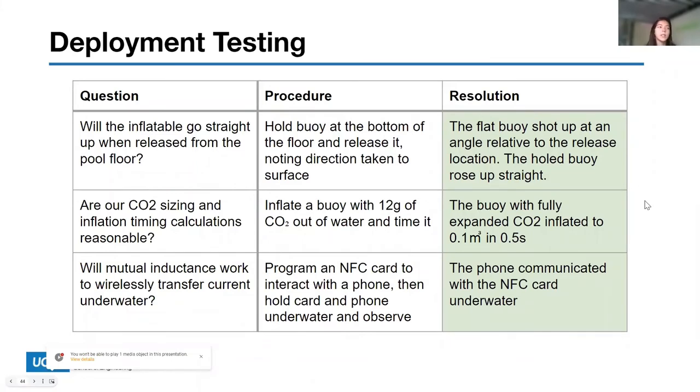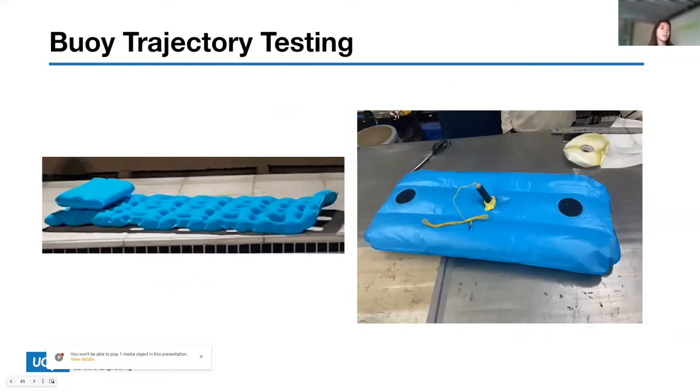We're testing our deployment system. We decided to answer questions we couldn't answer from publicly available literature or simulate easily. First question: will the inflatable go straight up when released from the pool floor? We held the buoy at the bottom of the pool and released it noting the direction it took in about four feet of water. The buoy with holes in it did go straight up. The buoy without holes shot off at an angle. This validated our production design which has space for water to pass through as it rises.